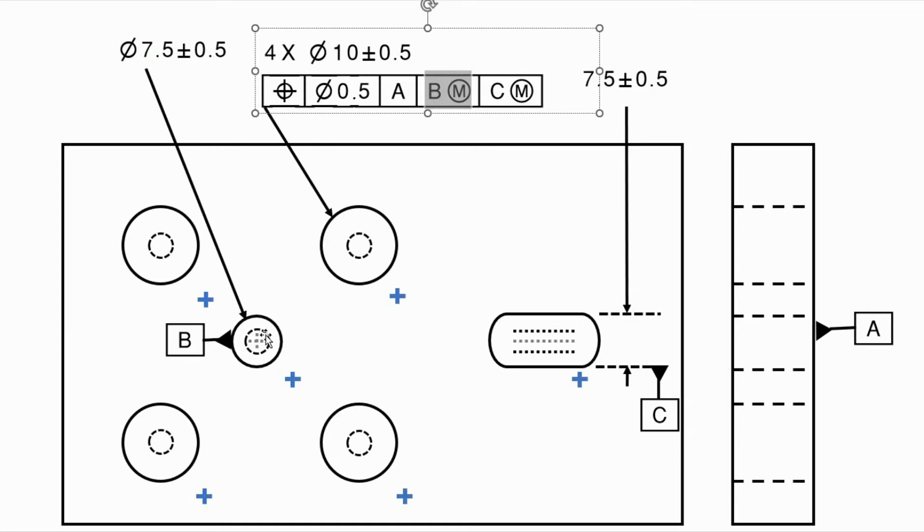At MMC here means there's the most material. That means the diameter is as small as it can get. That means seven, the tolerance is essentially zero at seven. So by the time we get up to 7.5, we have a tolerance zone of 0.5 and we could get all the way up to eight in size and have a tolerance zone of one. But here we have a tolerance zone or a mobile zone of 0.5 and ditto for datum C.